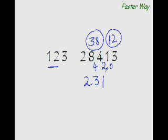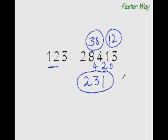Our new dividend would be 3 minus 3 times 1, that is 3, so 3 minus 3 is 0, and 231 is your answer. Don't you think this is a very easy way of dividing numbers? It not only saves you space but also saves you a lot of time and effort, because all the time you are dividing with an easy, friendly number.